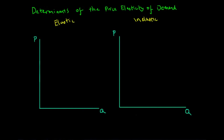In the previous lecture on the price elasticity of demand, we talked about how the price elasticity of demand refers to the responsiveness of the quantity demanded of a particular good or service relative to its change in price. Now what we didn't talk about in that lecture is how the price elasticity of demand is determined. So in this lecture we will talk about what the determinants of the price elasticity of demand are.